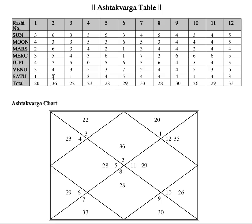By analyzing the trines you can suggest which areas a person should go into — not just by checking the 10th house. The trines give you a lot of clues about what the person should do and what will make them happy. Of course this should only be done after analyzing the entire horoscope. Sometimes people say they have the same thing in their chart but why doesn't it work — remember, everybody has a different chart, a different energy altogether.